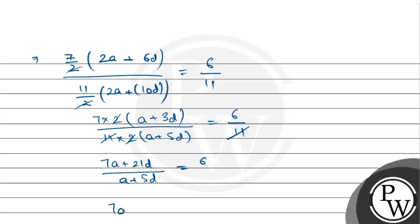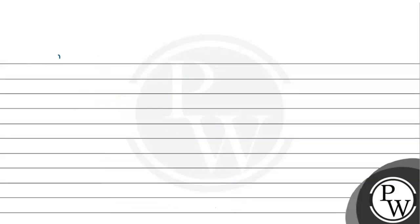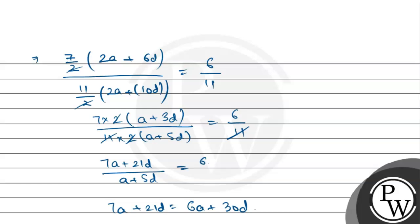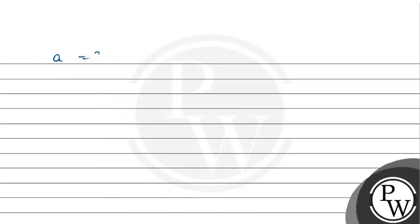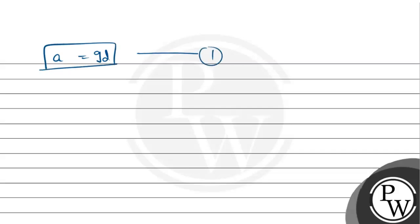तो यहां से: 7a + 21d = 6a + 30d. इससे हमें मिलता है: a = 9d. यह हमारी first equation है।